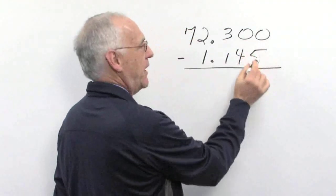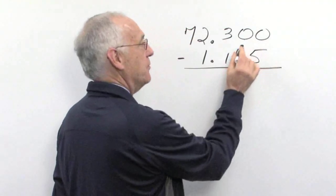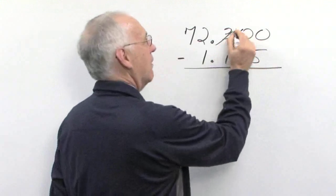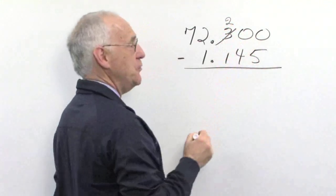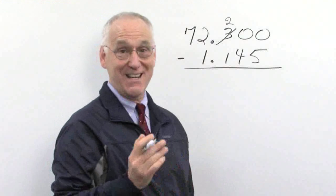Notice that we're not able to subtract five from zero or the four from the zero. But we can borrow from the three. The three becomes a two-tenths. So we're borrowing really ten-tenths.